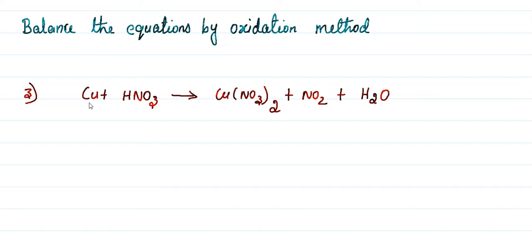So balance the equation. Third question: copper reacted with nitric acid, producing copper nitrate, nitrogen dioxide and water. This is the first step. In oxidation-reduction we will find the oxidation number.